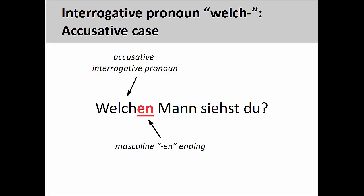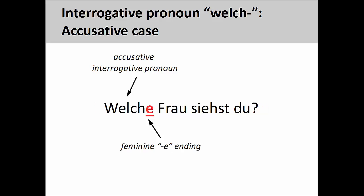And here, the masculine -en ending indicates that 'welchen Mann' is the direct object of the verb, and therefore in the accusative case. The feminine -e ending here could be either nominative or accusative, but the presence of 'du,' a nominative personal pronoun, suggests that 'welche Frau' functions as the direct object of the verb and is therefore in the accusative case.